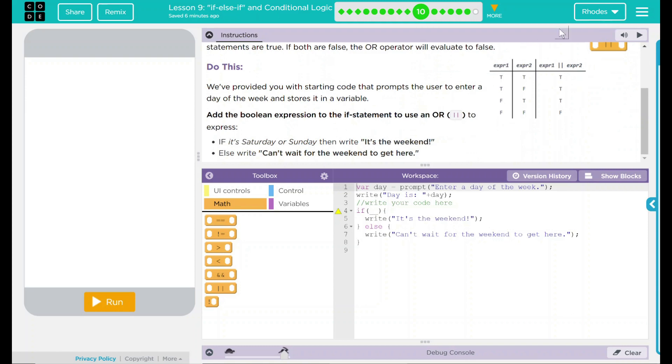Over here, we have an example of what we were just talking about. Two truths make a truth. A true and a false is a truth. A false and a true is a truth. But if both of them are false, then it's a false. So both of the conditions cannot be met for it to become true.